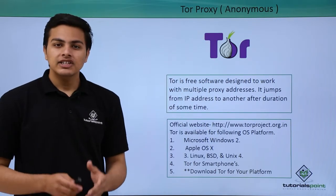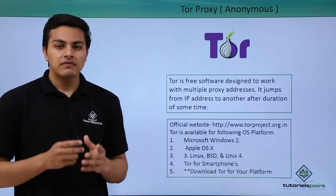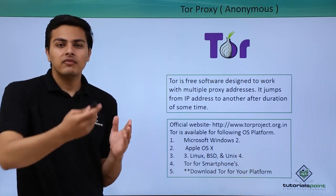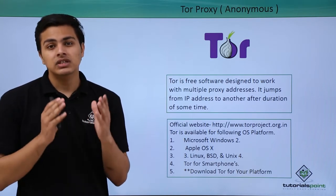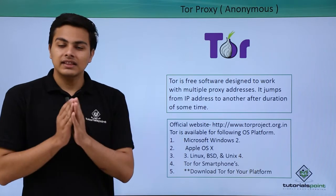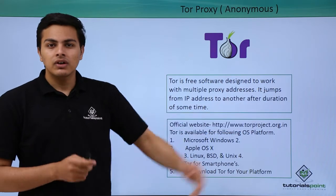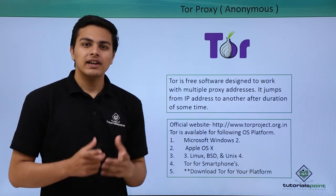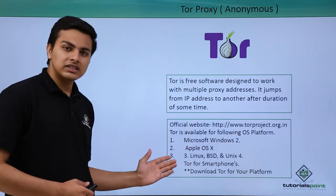Now let's talk about anonymous proxy. Anonymous proxy is also called Tor proxy. Tor is an open source software designed to hop through different proxy addresses before the request reaches the server. Tor proxy is one of the most secure proxies used nowadays — any request made through Tor hops through different servers before reaching the remote server. Tor comes with a Tor browser, downloadable from torproject.org, and is available for Windows, Linux, and smartphones.